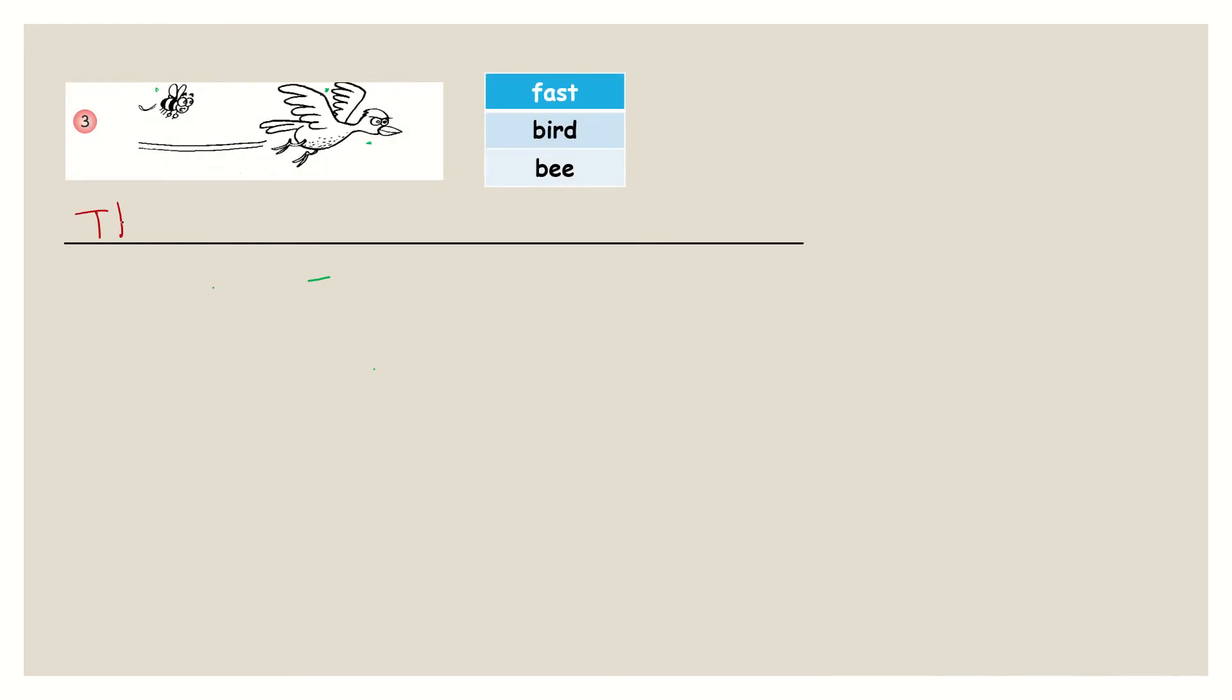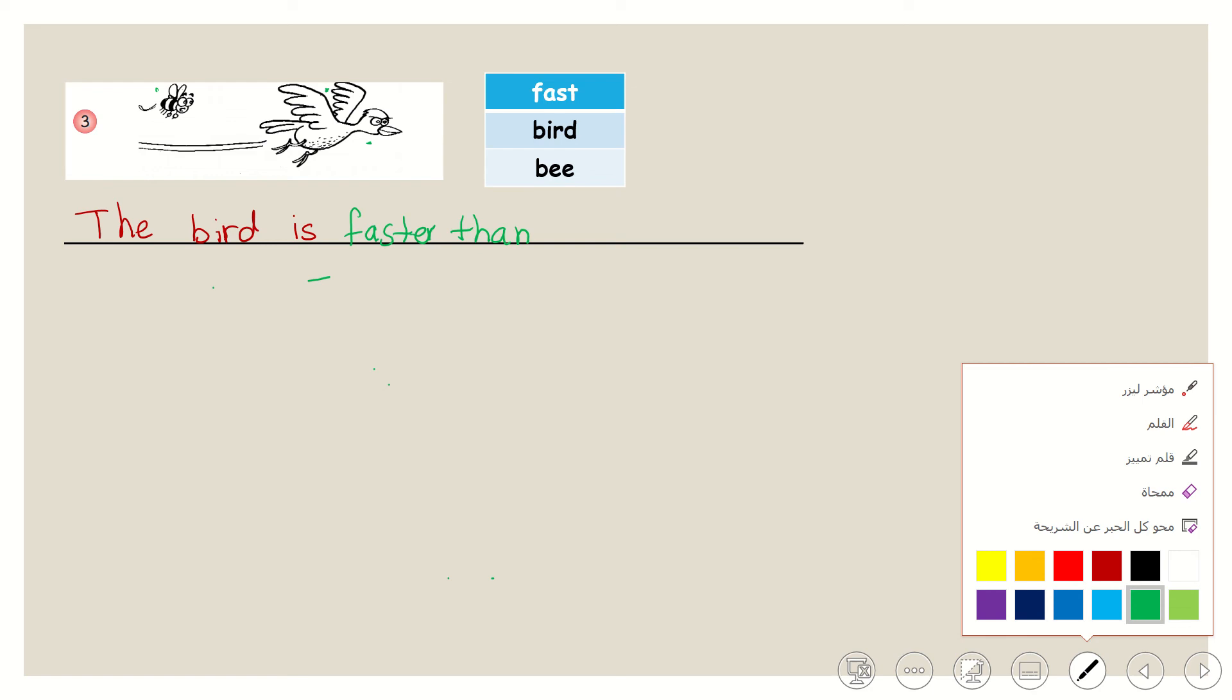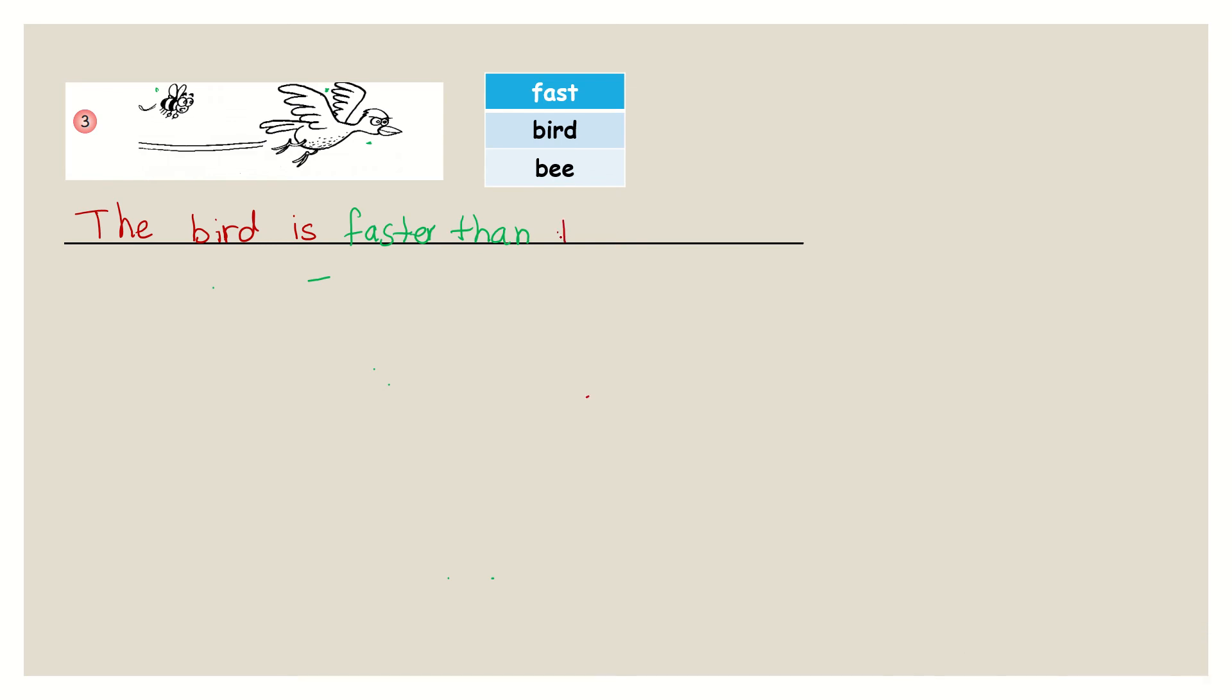So the bird is faster than the bee. I need to change the color again. Wait for me. Than the bee. Full stop. It's easy, right? It's very easy.